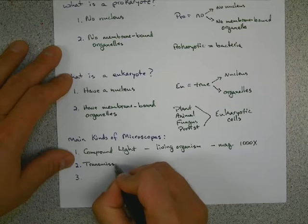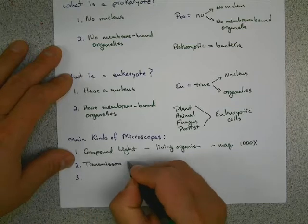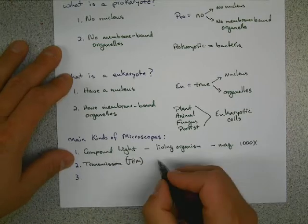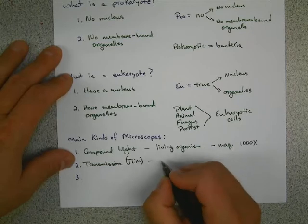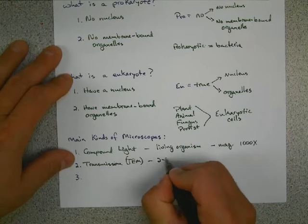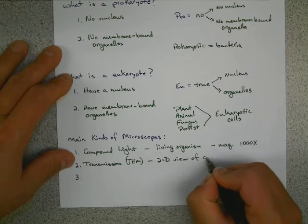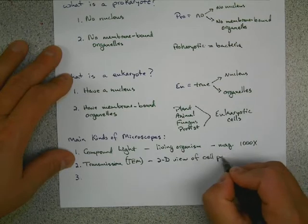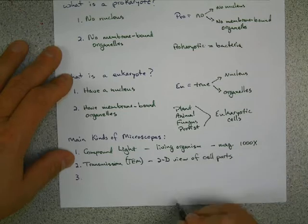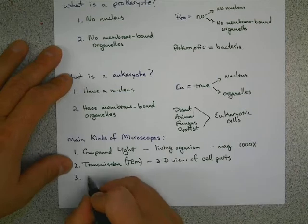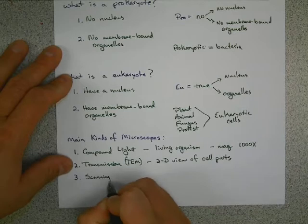The next two are electron microscopes. The first one is called a transmission electron microscope. And it is known as a TEM for short. And what this does is it gives you a two-dimensional view of cell parts. Fantastic for looking at the structure of a nucleus, a Golgi body, a mitochondria, etc.